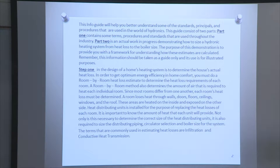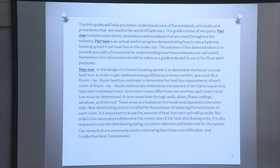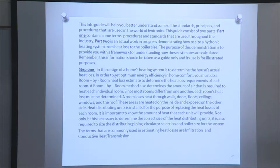These areas are heated on the inside and exposed on the other side. Heat distribution units are installed for the purpose of replacing the heat losses of each room. It is important to know the amount of heat that each unit will provide. Not only is this necessary to determine the correct size of the heat distribution units, it is also required to size the distribution piping, circulator selection, and boiler size for the system. The terms commonly used in estimating heat losses are infiltration and conductive heat transmission.